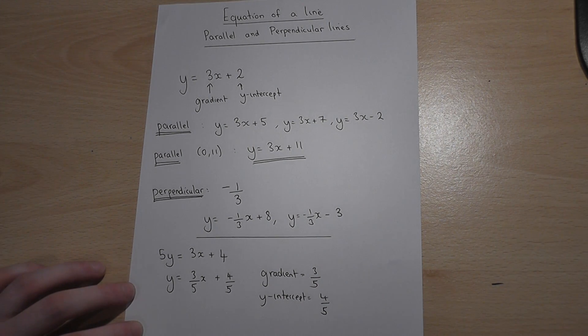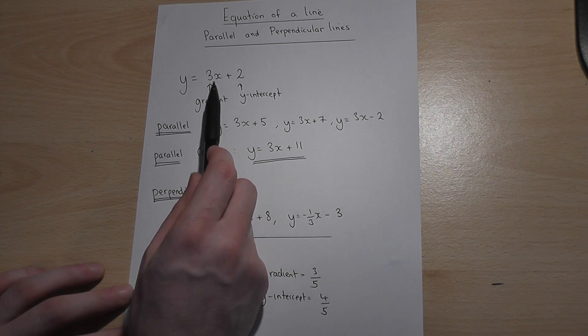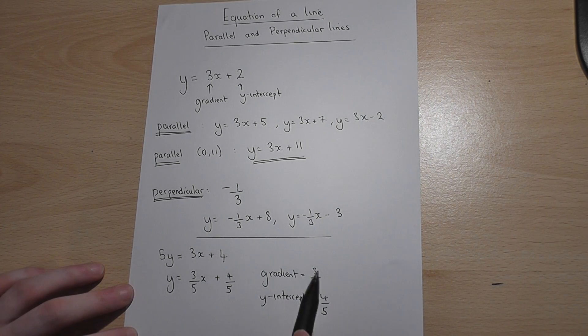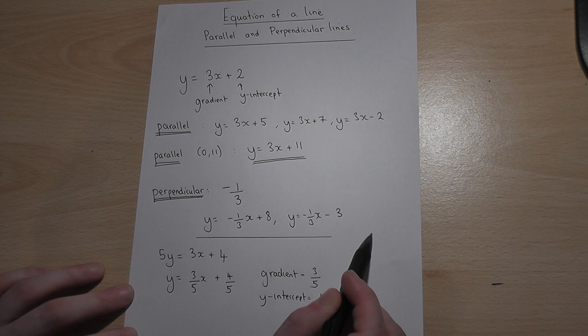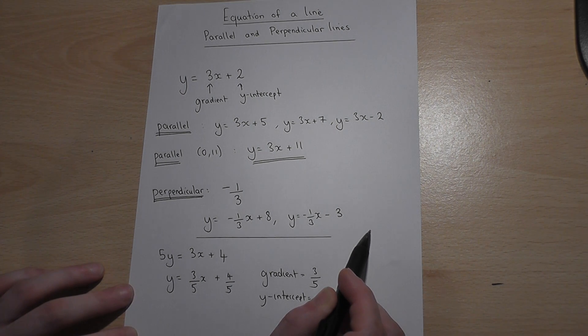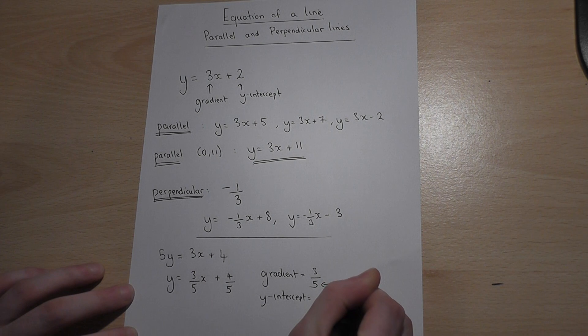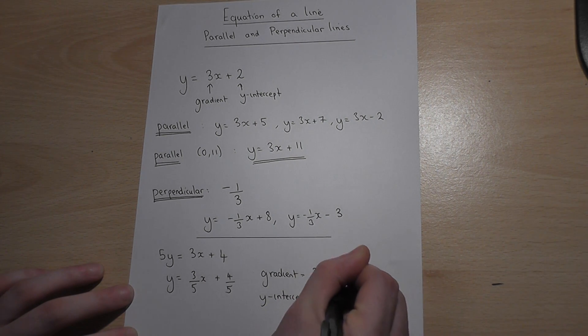And I will just finish by saying that whereas a gradient of 3 meant across 1 up 3, three fifths means across 5 up 3. The number underneath is always how far across the line goes. The number above is always how far up the line goes.